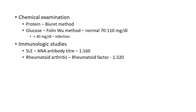For chemical examination, protein estimation is done by the Biuret method and glucose estimation by the Folin-Wu method. The normal glucose value is 70–110 mg/dL; any value less than 40 mg/dL indicates bacterial infection. Immunologic studies are also done: in systemic lupus erythematosus the anti-nuclear antibody titer cutoff is 1:160, and in rheumatoid arthritis the rheumatoid factor titer cutoff is 1:320.